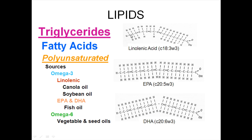They're both omega-3 because starting from the methyl end, counting one, two, three — for linolenic, EPA, and DHA — the first double bond is on the third carbon. After that point they become quite different. This notation indicates how many carbons are in the chain — 18 carbons for linolenic, 20 for EPA and DHA — and how many double bonds each has: three for linolenic, five for EPA, and six for DHA.